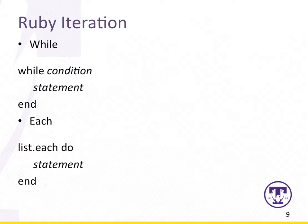In Ruby, the iteration construct can use a while condition statement construct with the block closed by end. There is also an each construct where if you have a list of items, you can iterate over each one of the items in the list by using dot each and then do the statements.